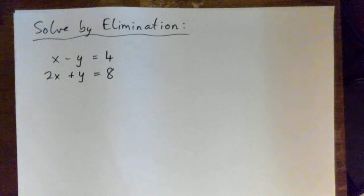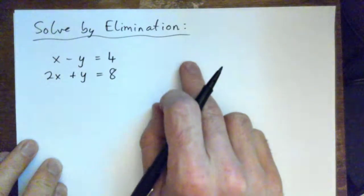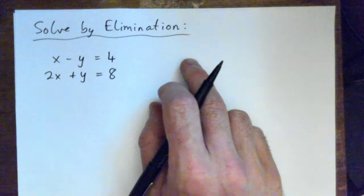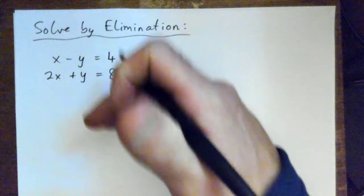Alright, so x minus y equals 4 and 2x plus y equals 8. We're going to solve by elimination. Just to remind everybody, elimination is where you add the equations together to make one of the variables cancel.